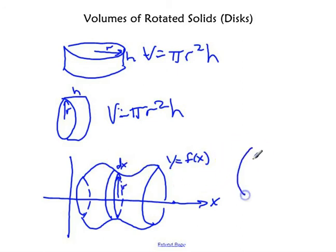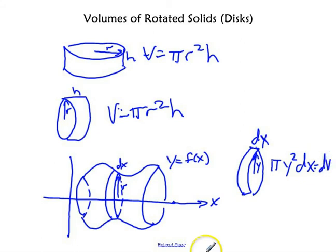because it's a little tiny change in horizontal distance. So the volume of one disk on this figure is going to be pi times the radius squared, which in this case is y, times the height, which in this case is dx. And that will be the volume of one disk, which we'll call dv.